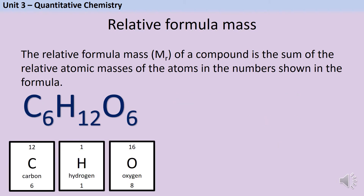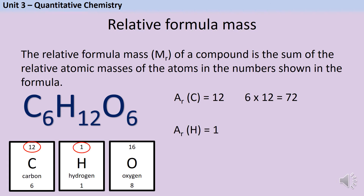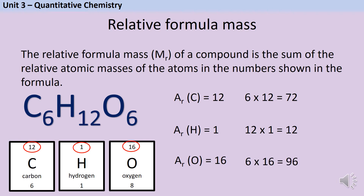This next one is a molecular substance — here's glucose. Carbon has a relative atomic mass of 12, and there are six atoms of carbon in this molecule. Hydrogen has a relative atomic mass of 1, and there are 12 atoms of hydrogen. Oxygen has a relative atomic mass of 16, and there are six atoms of oxygen. Adding all of those up gives a relative formula mass of 180.